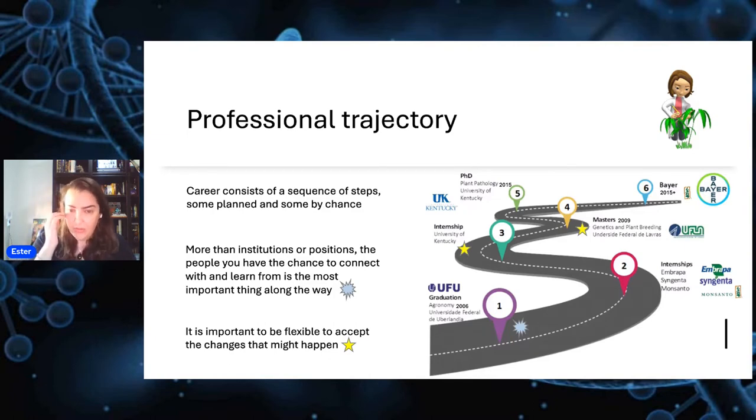Then because of the internship, I ended up doing my PhD at University of Kentucky in plant pathology. I did my master's in genetics and plant breeding. And then in 2016, I started at Monsanto and now Bayer. So that's my professional trajectory so far.